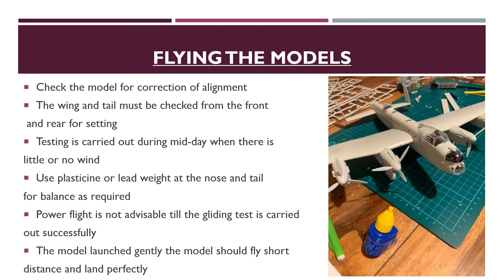Since we are done with the construction of different types of models, let's learn about how to fly a model. First, check the model for correct alignment — the wing and tail must be checked from front and rear for settings. Testing is carried out during midday when there is little or no wind. Use lead weight on the nose and tail for better balance as required. Power flight is not advisable until the gliding test is carried out successfully. The model should be launched gently and should fly a short distance and land perfectly.